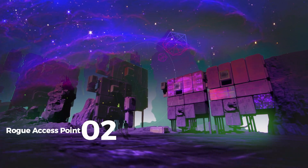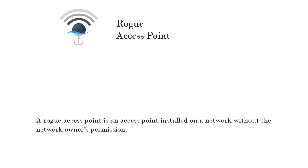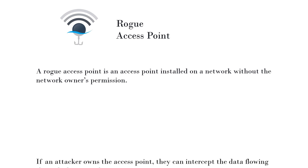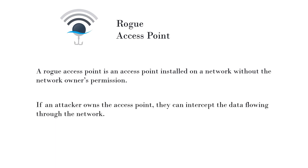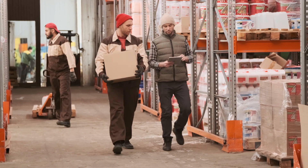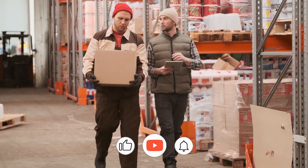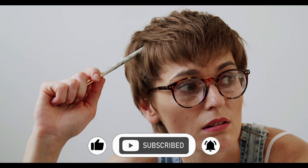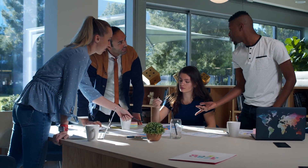The second is a rogue access point. A rogue access point is an access point installed on a network without the network owner's permission. If an attacker owns the access point, they can intercept the data flowing through the network. This is why coffee shops warn their customers — to stop unauthorized access points from intercepting users' data. We should think twice before connecting to a free wireless hotspot in public locations such as coffee shops or airports. If we see something odd, we should notify the network owner.